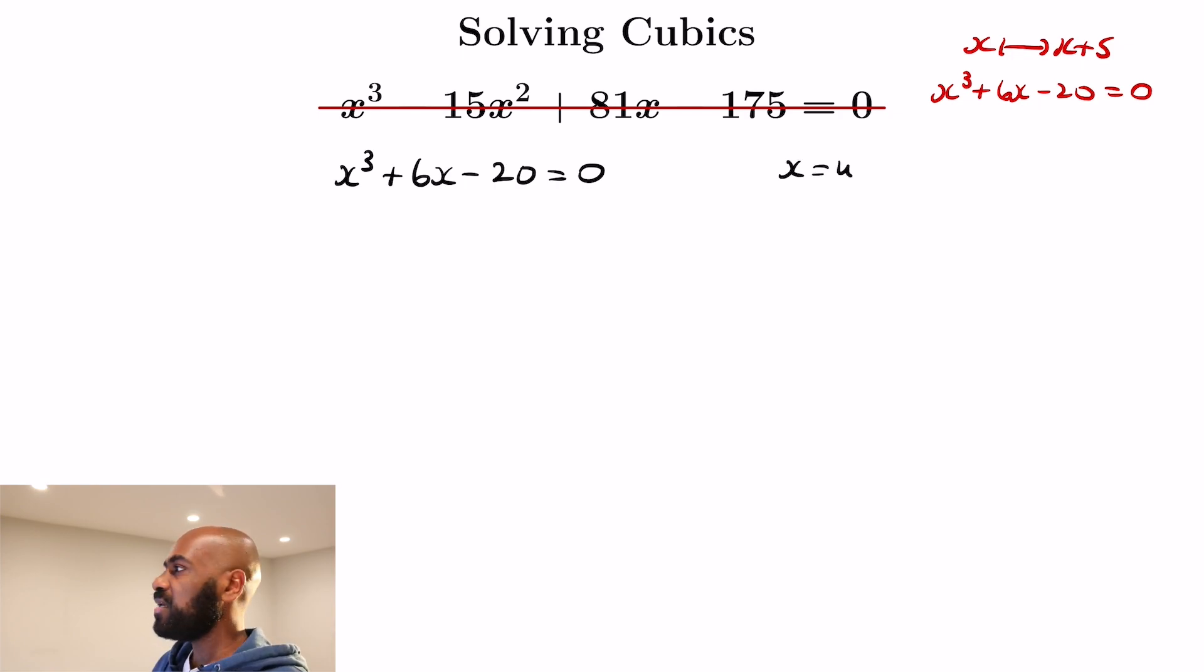So the idea is to let x be u minus v. In that case, x cubed is going to be the quantity u minus v all cubed, which is u cubed minus 3u squared v plus 3u v squared minus v cubed.